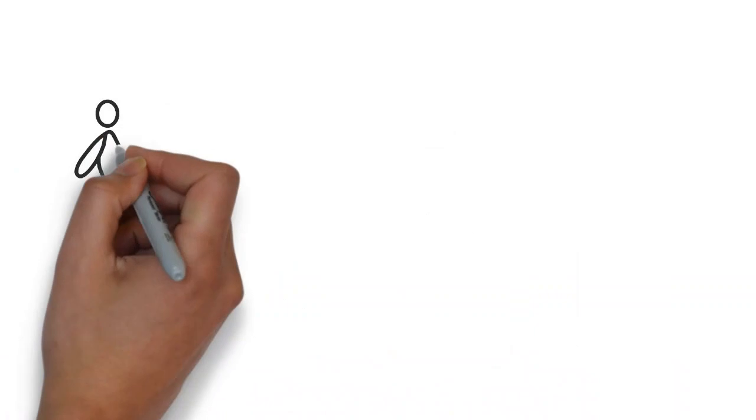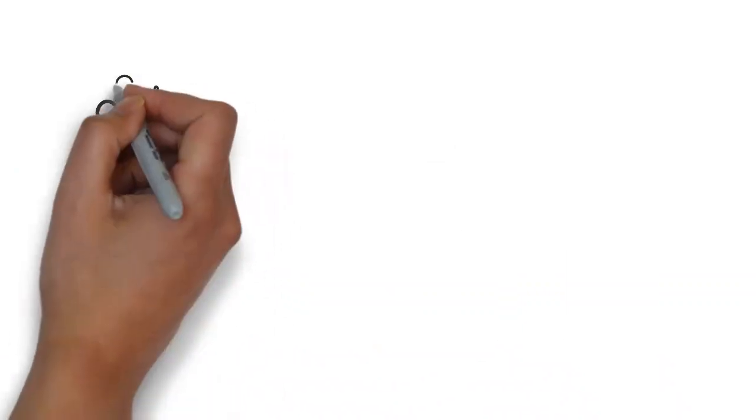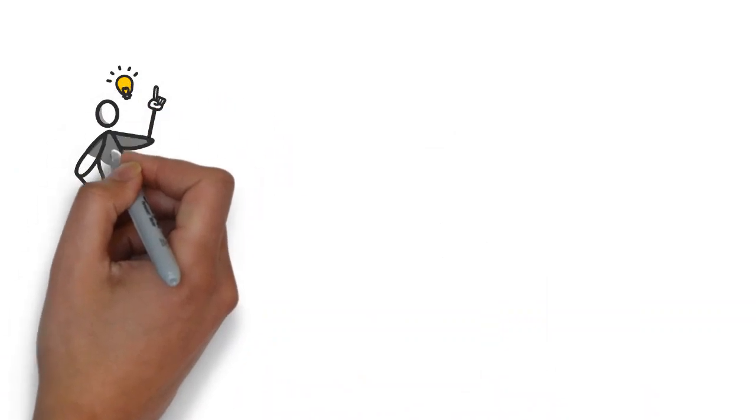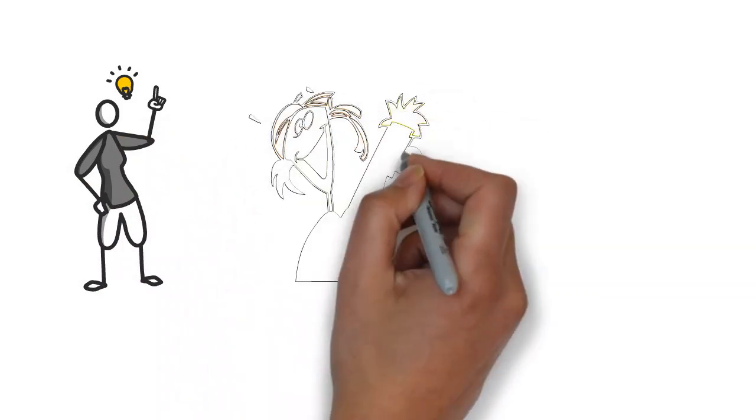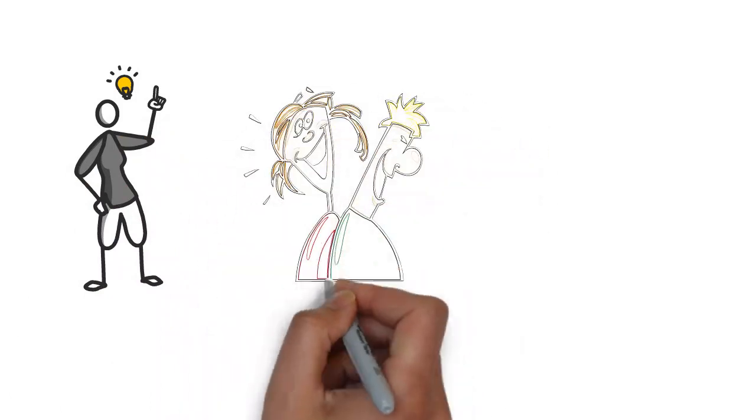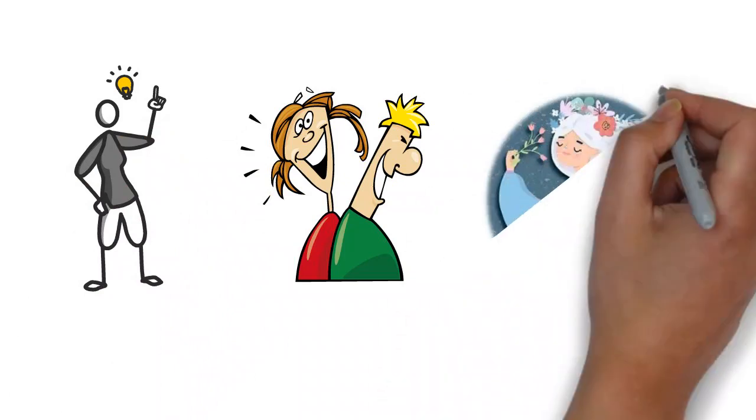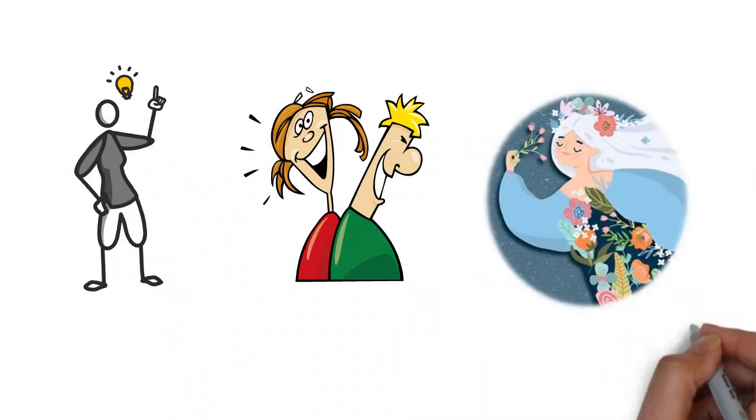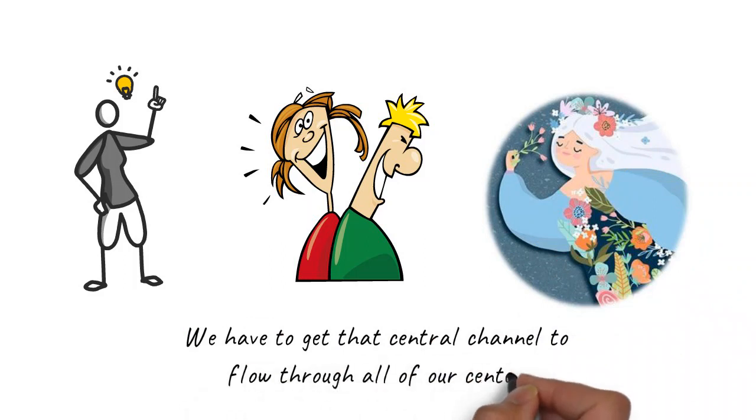Someone might have a lot of flow in their mind, they can think really clearly, but you can't feel them. Or someone might be very sexually charged, but they're not very smart about the partners that they choose. And if we're going to really develop as a whole being, we have to get that central channel to flow through all of our centers.